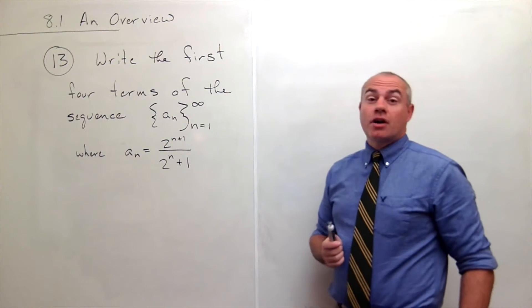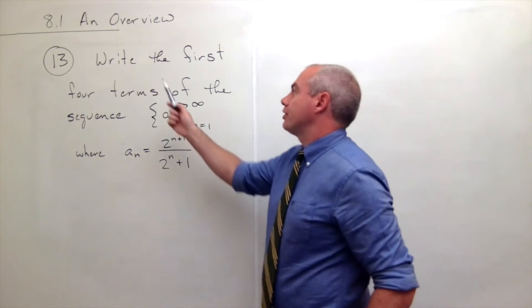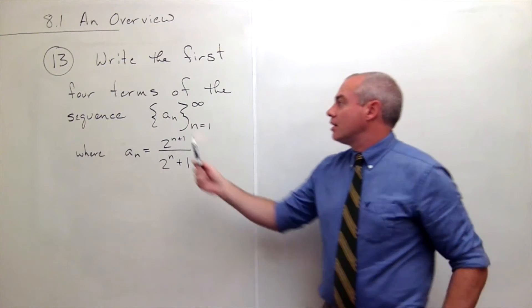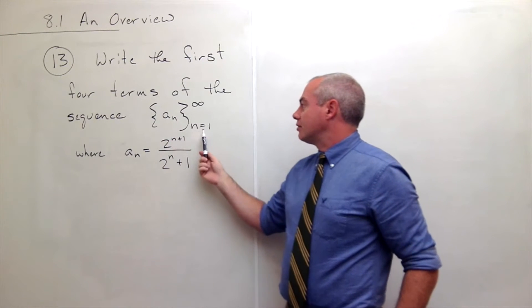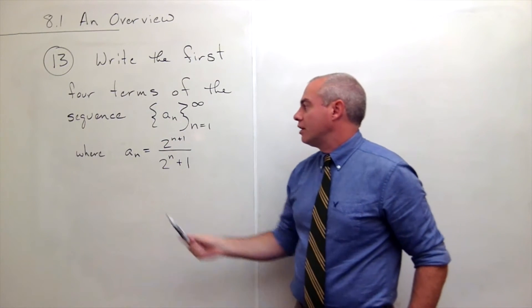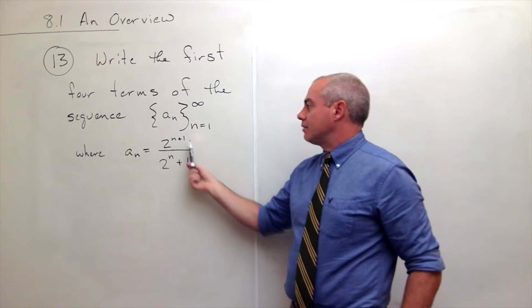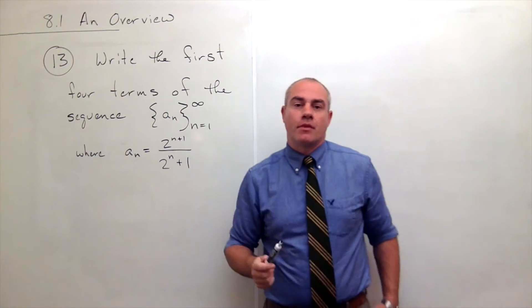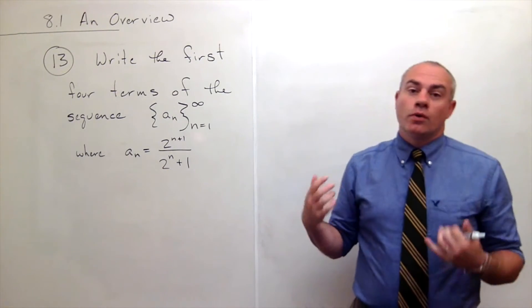We're going to start with problem number 13, which says write the first four terms of the sequence. So the sequence a sub n, n going from 1 to infinity, where each a sub n is equal to 2 to the n plus 1 over 2 to the n plus 1.